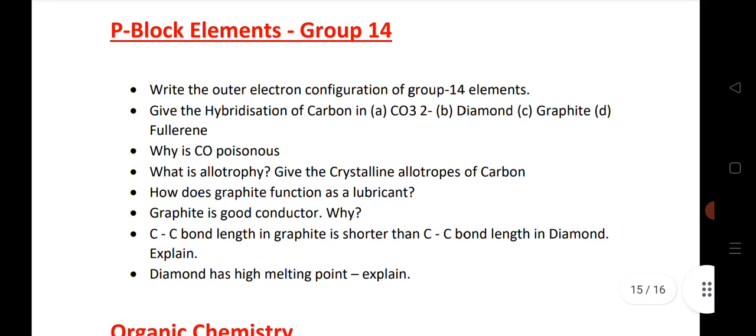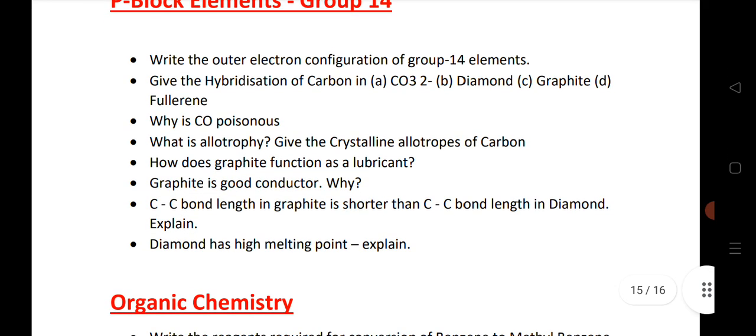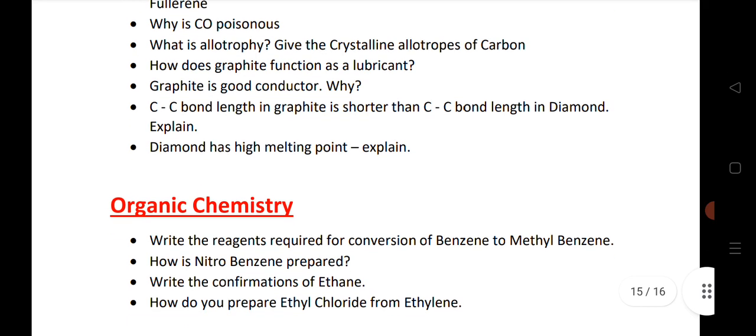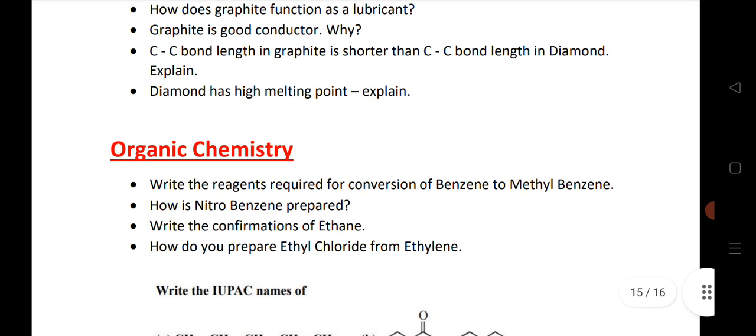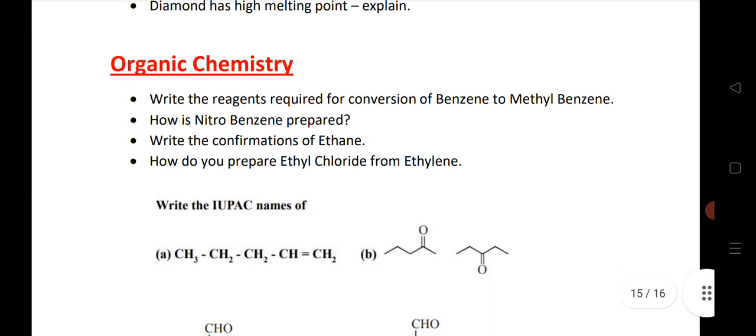Next is P-block element, group 14. Outer electronic configuration of 14 element. Hybridization of carbon. CO poisonous. Allotropy. Graphite functions as a lubricant. Graphite is a good conductor. CC bond length. Diamond has high melting point. Explain.